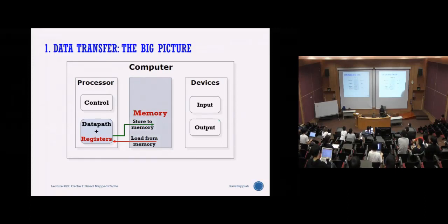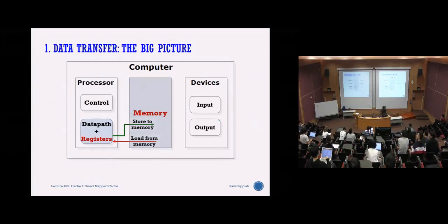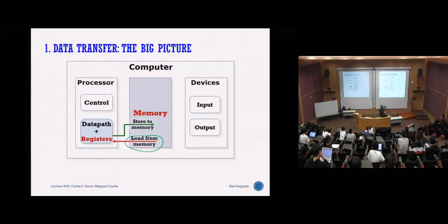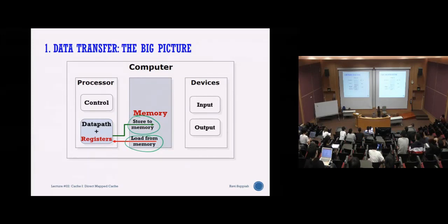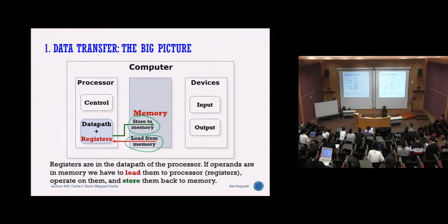Whenever you execute a program, you always interface with memory because you need to fetch your instructions from memory. So you definitely need to load from memory — that's the first thing. After processing, in some cases you may need to write back to memory. So in all instructions you have to fetch from memory, and in some cases at the end of execution you may need to write back, if you're going to update memory. This happens very frequently throughout program execution.